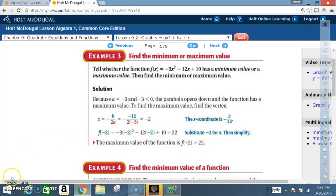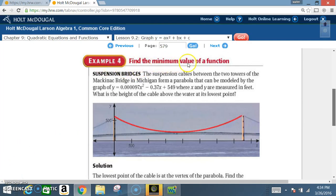Example 4: Find the minimum value of a function. Suspension bridges: The suspension cables between the two towers of the Mackinac Bridge in Michigan form a parabola that can be modeled by the graph of y equals 0.0000097 times x squared minus 0.37x plus 549, where x and y are measured in feet. What is the height of the cable above the water at its lowest point?